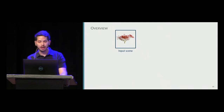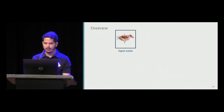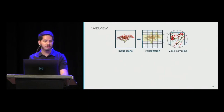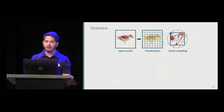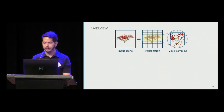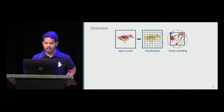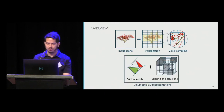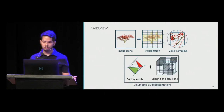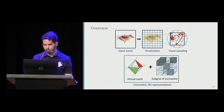To build our representation, here is a brief overview. We take the input scene, voxelize it, and for each voxel, we sample rays from outside to get the normals and the color of the hits. We keep the occlusion as 1 if it hits an object, or 0 otherwise. Finally, we use all the normals to create the oriented virtual mesh, which stores the distribution of normals and colors, and the subgrid of occlusions is created to approximate the occlusion due to the voxel.